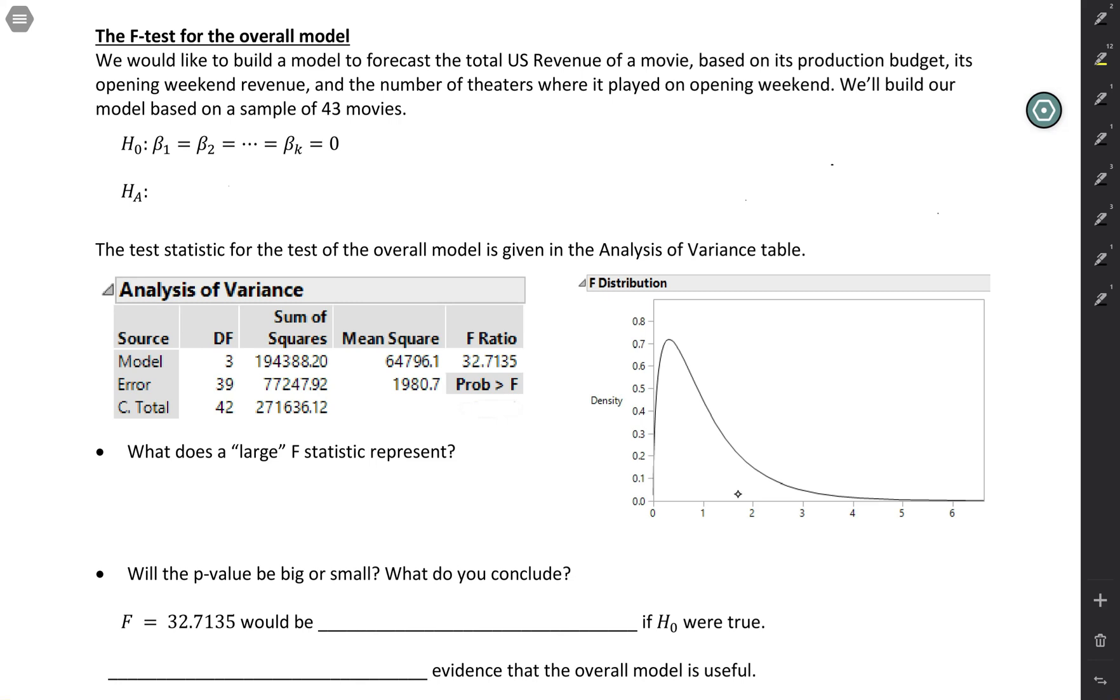And here we're going to look at an example where we're trying to predict the total US revenue of a movie based on three different explanatory variables: its production budget, its opening weekend revenue, and the number of theaters where it played on opening weekend.